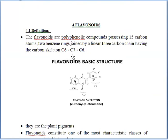Flavonoids are polyphenolic compounds, meaning there are many phenol groups present — that's why they are known as polyphenolic compounds. They contain 15 carbon atoms. The basic structure for flavonoids is C6-C3-C6: two benzene rings (C6 and C6) joined by a three-carbon chain (C3). This is the basic structure for the flavonoids.